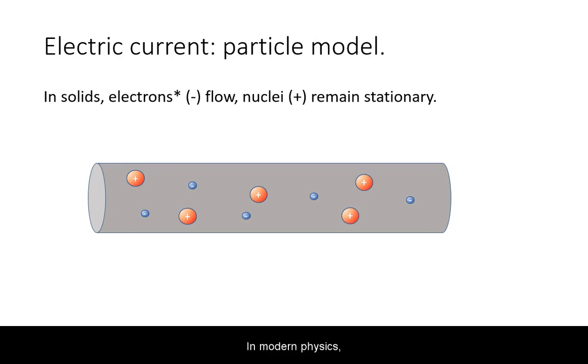In modern physics, we know that in solids, the positive charge is found in the atomic nucleus. In solids, the atomic nuclei do not move. Rather, it is electrons that carry negative charge that are able to move.